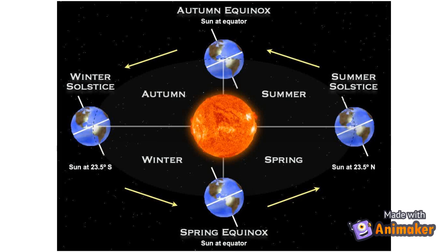When the sun is closest towards the north of the equator, it is known as the autumn equinox. It usually takes place during the 22nd or 23rd of September. When the sun is closest towards the south of the equator, it is known as the spring equinox. It usually takes place during the 22nd of March.